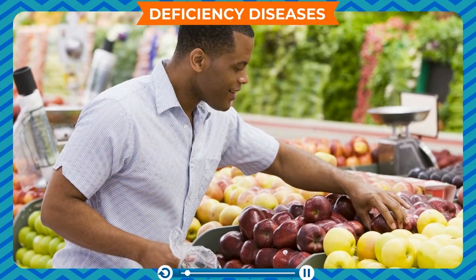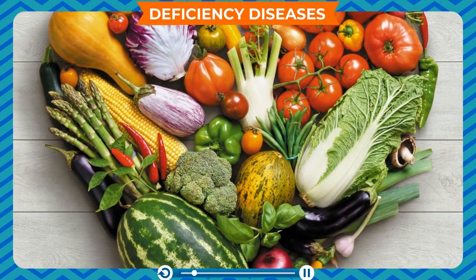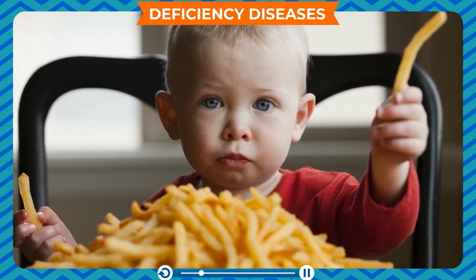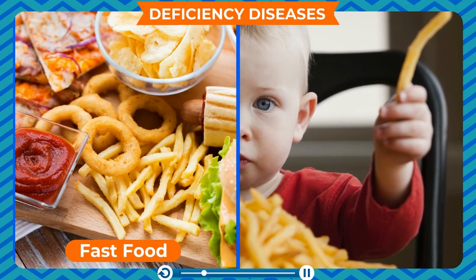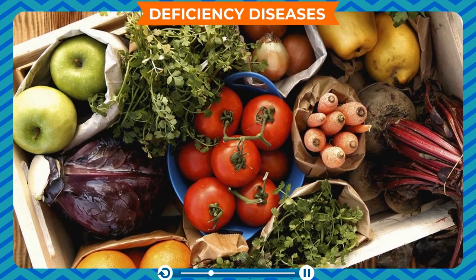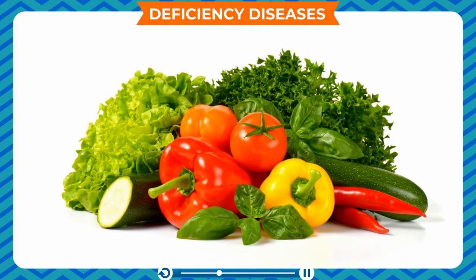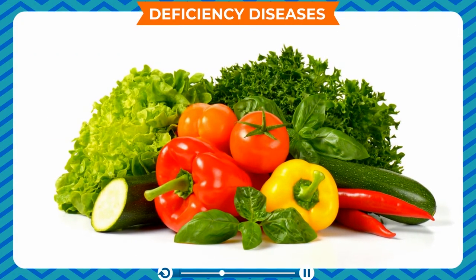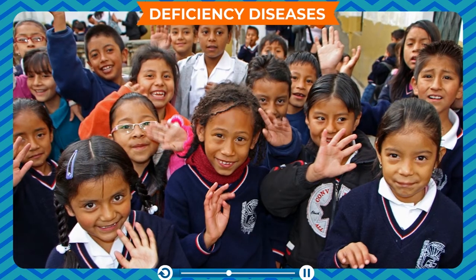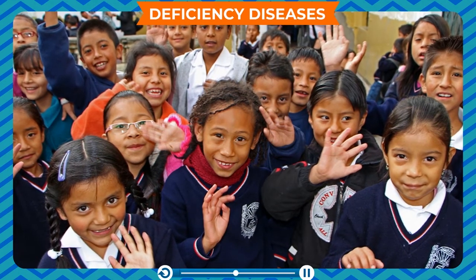Many people in the world cannot afford a balanced diet due to poverty. Some others cannot get a balanced diet because of unhealthy food habits like eating fast food and junk food. People who do not get the right amount of nutrients from their food suffer from deficiency diseases. Prolonged lack of energy-giving and body-building nutrients in the body causes malnutrition. It mostly affects children and is a major cause of infant mortality in developing countries.